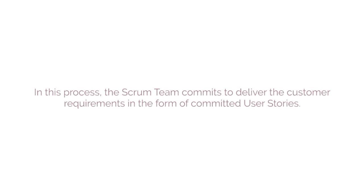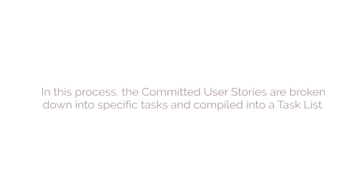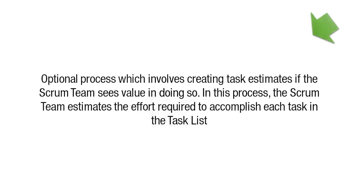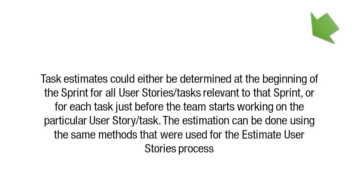Another process that is part of the Plan and Estimate phase is Identify Tasks. In this process, the Committed User Stories are broken down into specific tasks and compiled into a task list. The next process is Estimate Tasks — an optional process which involves creating task estimates if the Scrum Team sees value in doing so. Task estimates could be determined at the beginning of a sprint, or for each task just before the team starts working on it.